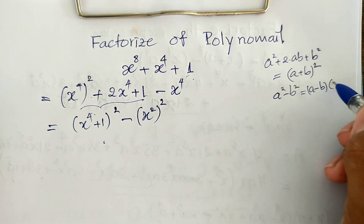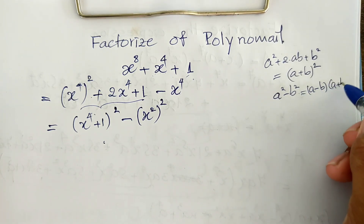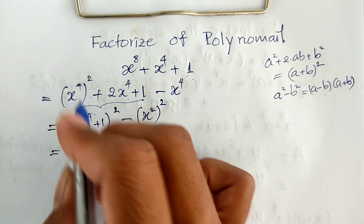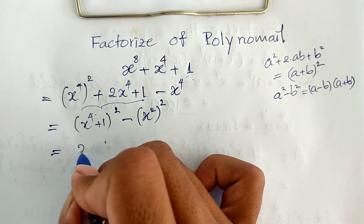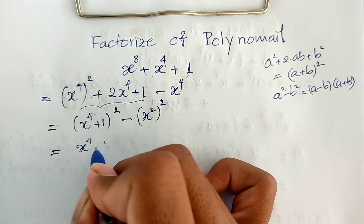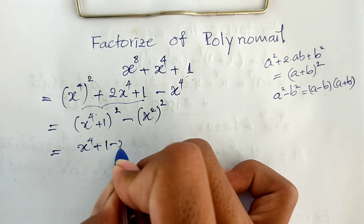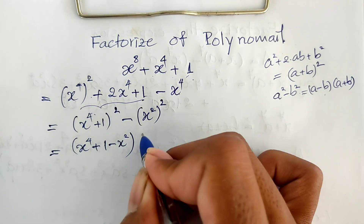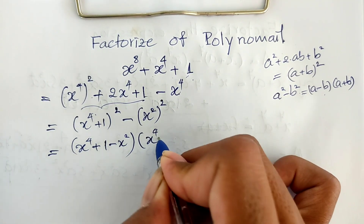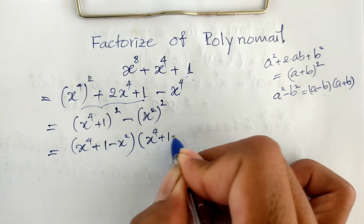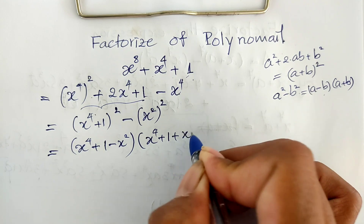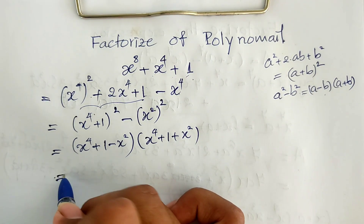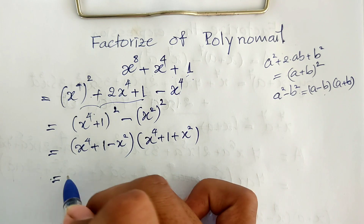Applying the difference of squares rule, we get h to the power 4 plus 1 minus h squared, multiplied by h to the power 4 plus 1 plus h squared. So we now have two factors from the original polynomial.